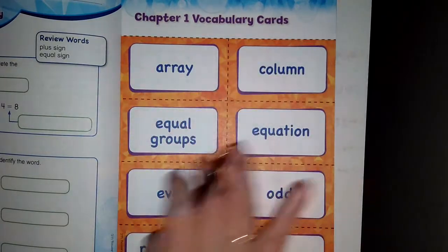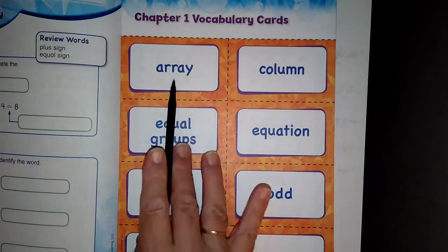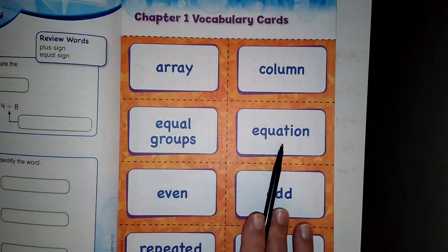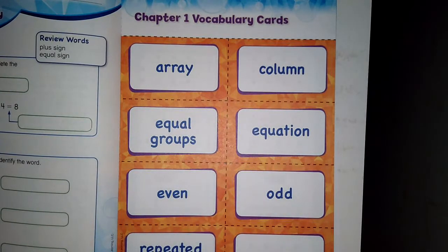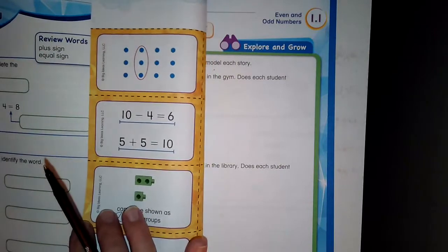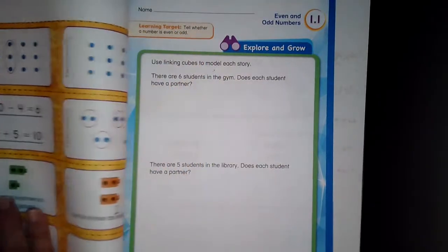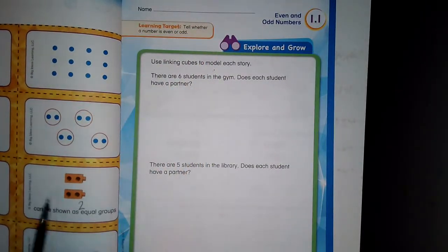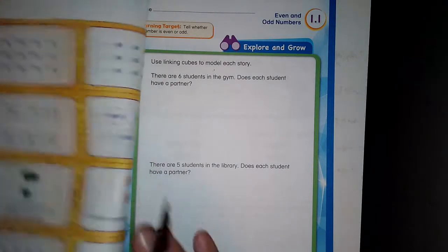These are words that we have practiced already this year: array, column, equal groups, equation, even, odd, repeated addition, and row. So if you cut them out like vocabulary cards, on the back it explains in pictures and shows you what it is for each one.